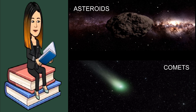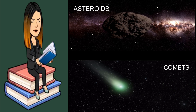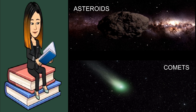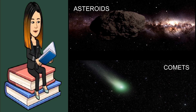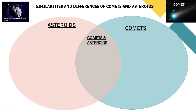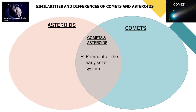They are remnants from the formation of the solar system 4.6 billion years ago. Both comets and asteroids have irregular shapes and varied sizes. The similarities of comets and asteroids are as follows: they are both referred to by astronomers as near-earth objects or NEO, and they are both remnants of the early solar system about 4.6 billion years ago.